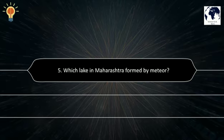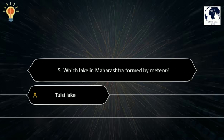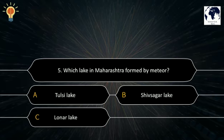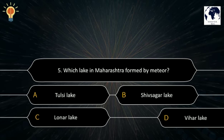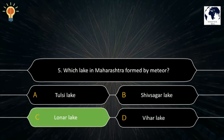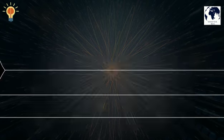Question number 5. Which lake in Maharashtra was formed by a meteor? A. Tulsi Lake. B. Shivsagar Lake. C. Lonar Lake. D. Vihar Lake. The correct answer is C. Lonar Lake.